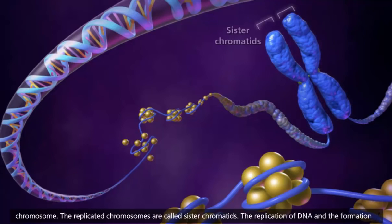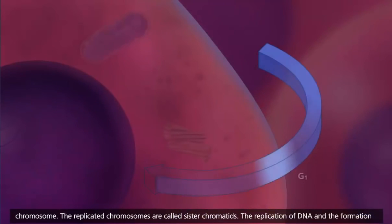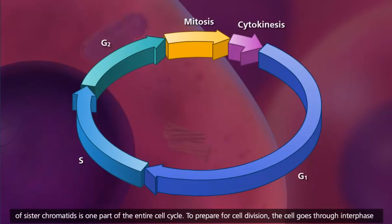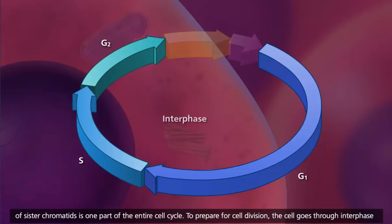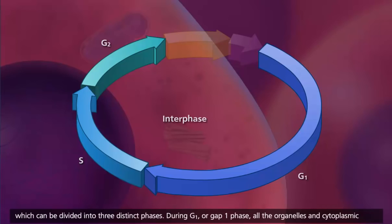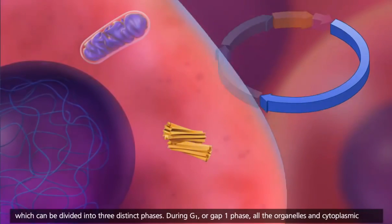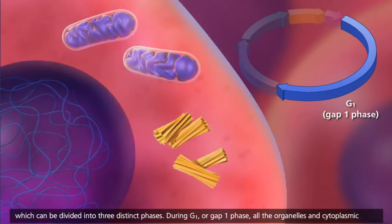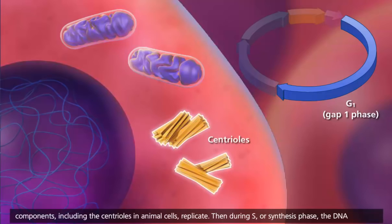The replicated chromosomes are called sister chromatids. The replication of DNA and the formation of sister chromatids is one part of the entire cell cycle. To prepare for cell division, the cell goes through interphase, which can be divided into three distinct phases. During G1 or GAP1 phase, all the organelles and cytoplasmic components, including the centrioles in animal cells, replicate.